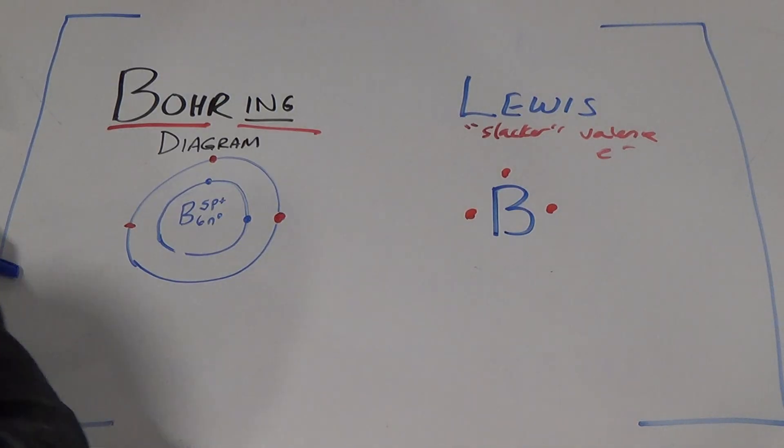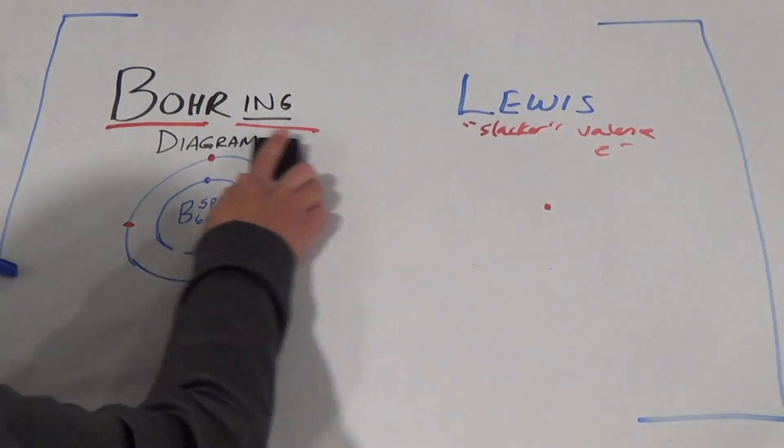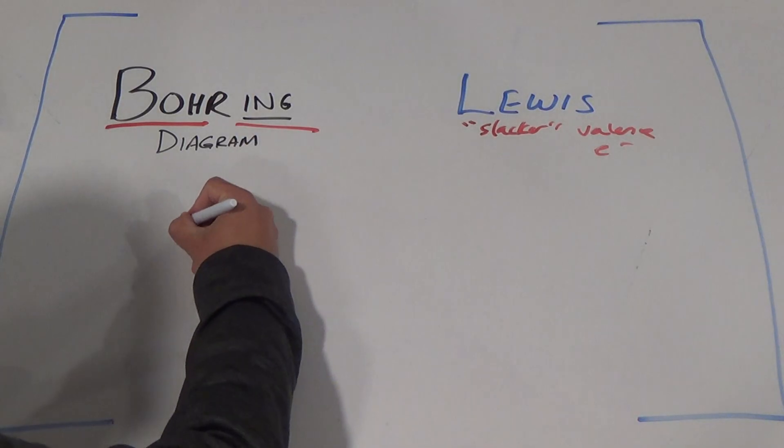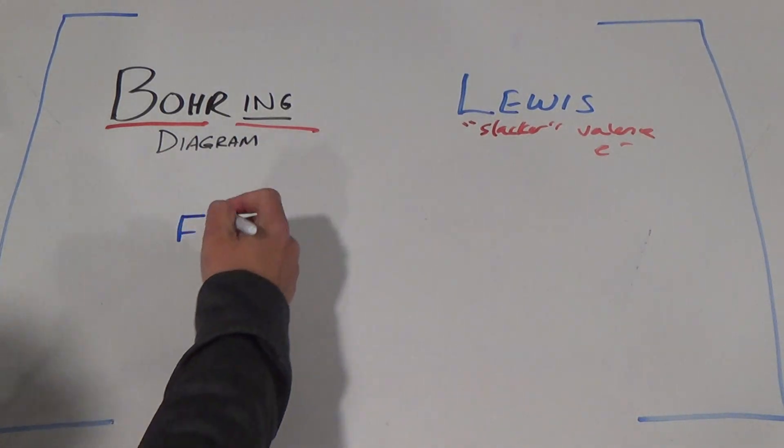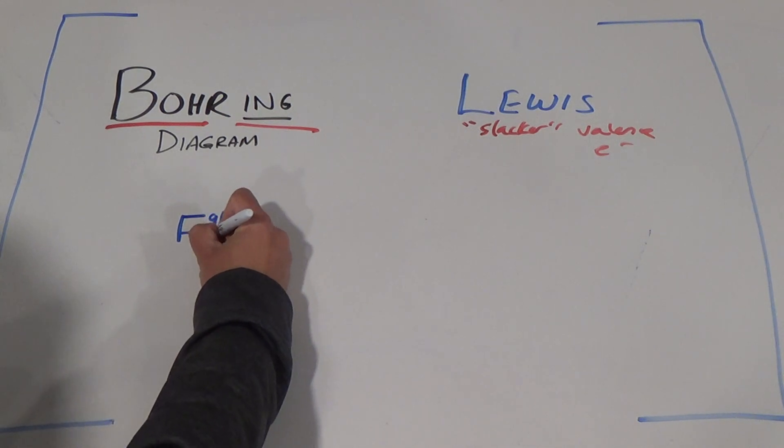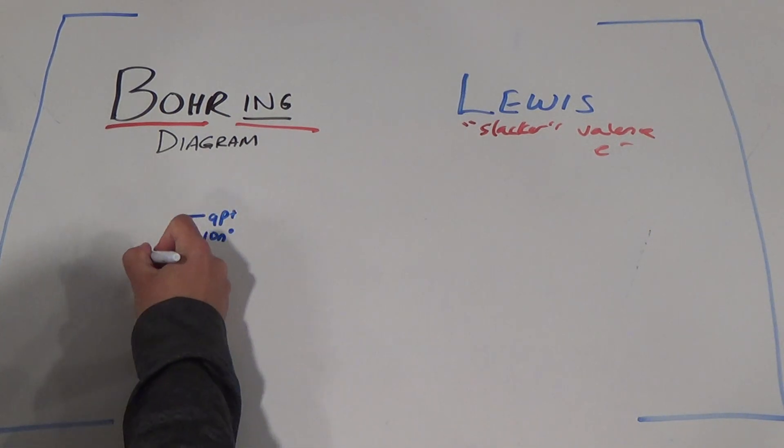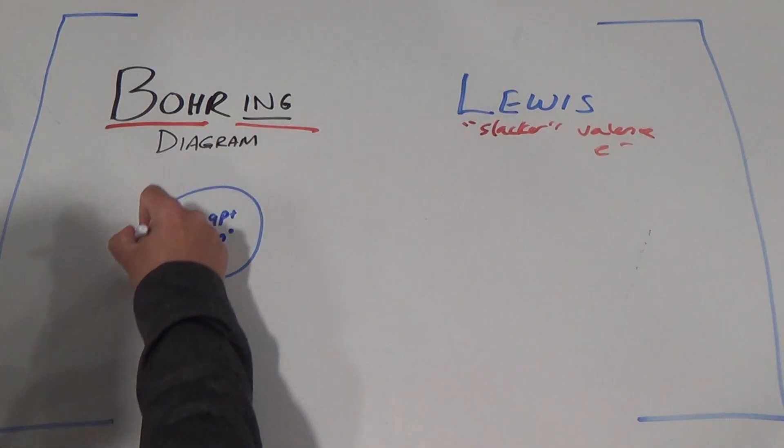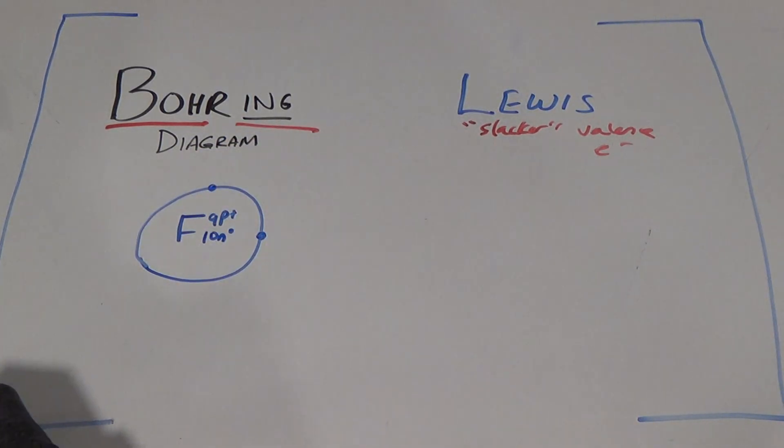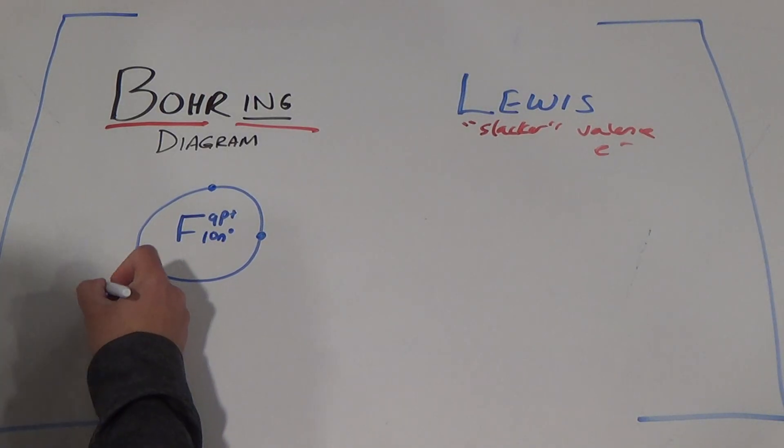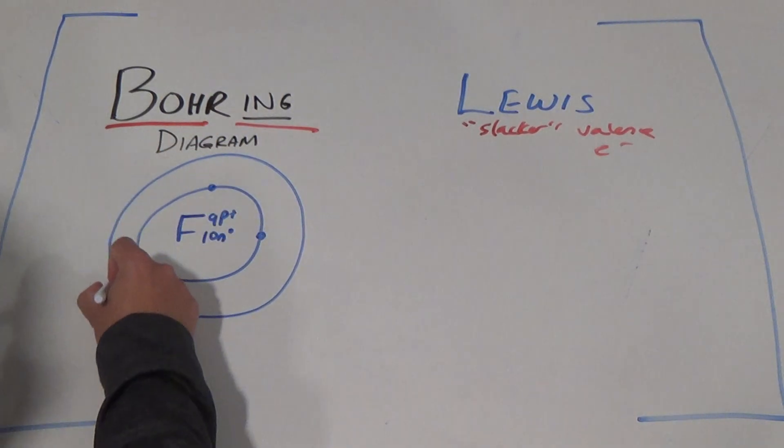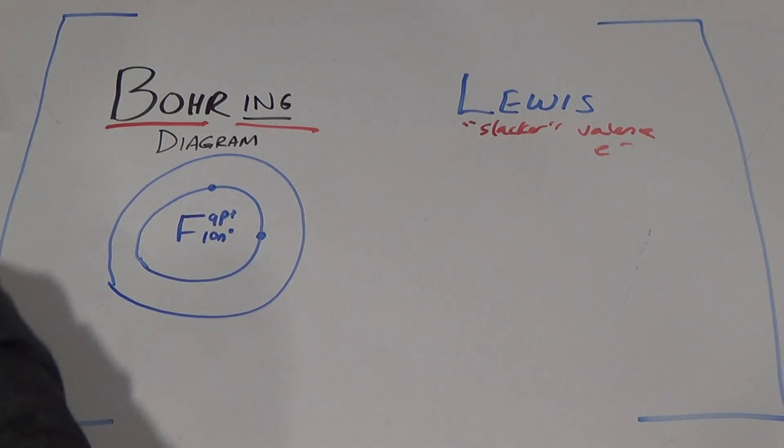Now let's do another one. Let's do fluorine. Here's fluorine. I'm going to do this a little faster. Nine protons, ten neutrons. How many in the first level? Two - one, two. Are you awake yet? I'm ready to fall asleep. It's in period two, so it's got another level. How many more electrons do we have to draw? Seven.